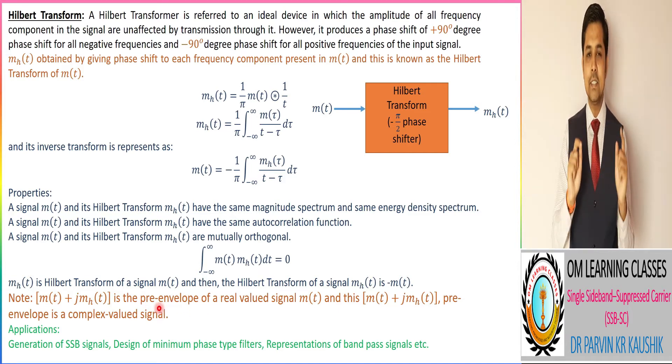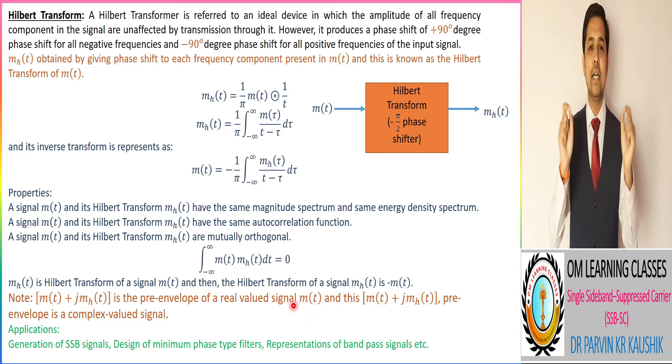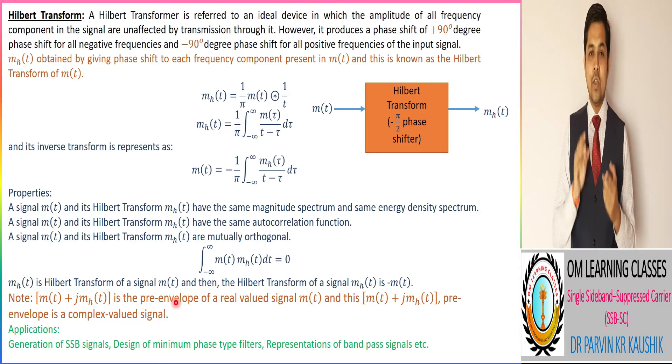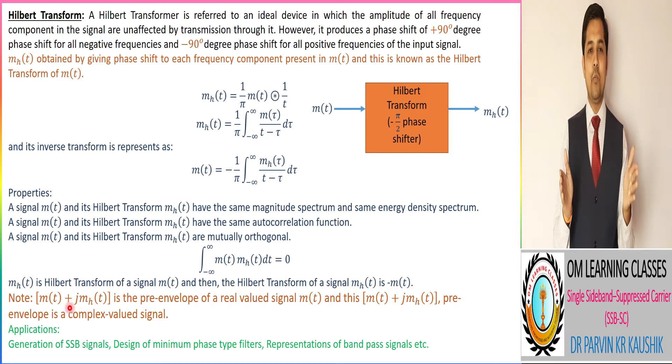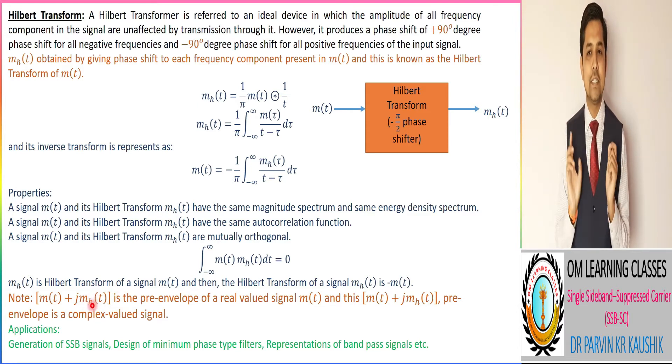And that is MHD plus j MHD. And it is known as the pre-envelope of a real value signal that is M. So for getting the pre-envelope of any real value signal, then it is corresponding to signal plus j Hilbert transform of that signal. And again, this pre-envelope is a complex valued signal.